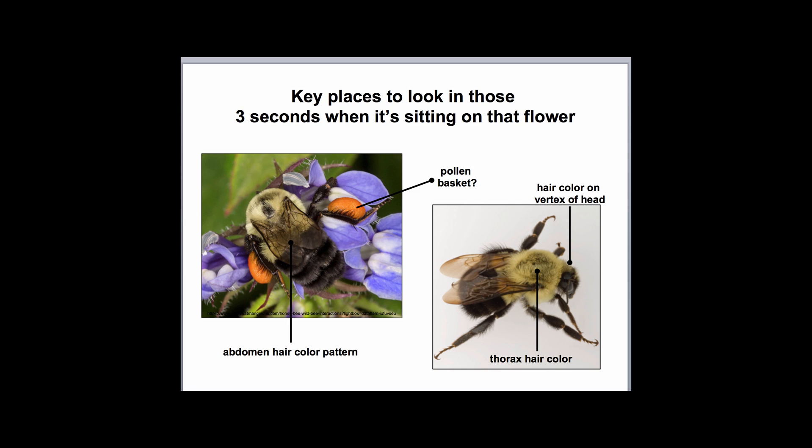You won't always have a lot of time when you're looking at bees on a flower before they fly off to pick out the most important identifying features. My advice is to start with the hair color pattern on the abdomen — try to get behind the bee and really get a good look at the hair color pattern there. Most species can be told in part by looking at the hair on the abdomen. For ones that might look similar, you can then look at the thorax hair color or the hair color on the back of the head to see if it's black or yellow or mixed. Another clue is whether or not the females are carrying pollen, because in the rare parasitic bumblebee species, the females lack a pollen basket.